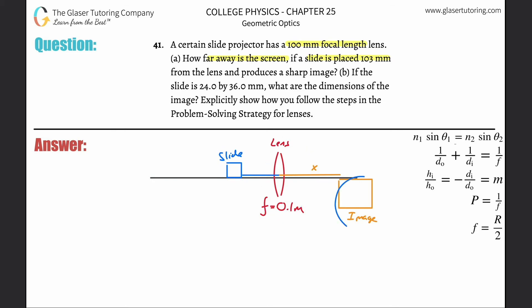Here's the slide, the lens, and the image. The distance from the lens to the slide is 103 millimeters, but we need that in meters for consistency: 0.103 meters.